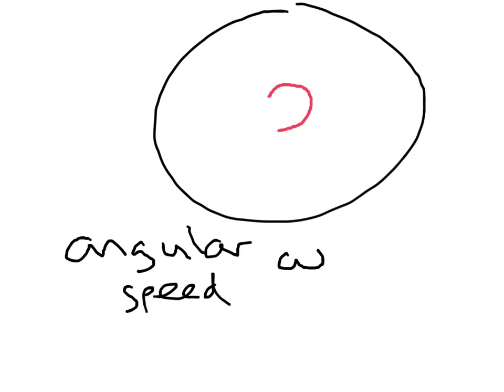Another useful quantity to think about when we're talking about circular motion is angular speed or angular velocity. This is simply a measurement of the angle that the object goes through per second, and its symbol is this Greek letter omega. It looks a bit like a lowercase w. So, really, it's just a measurement of how much angle does the object in circular motion go through per second.